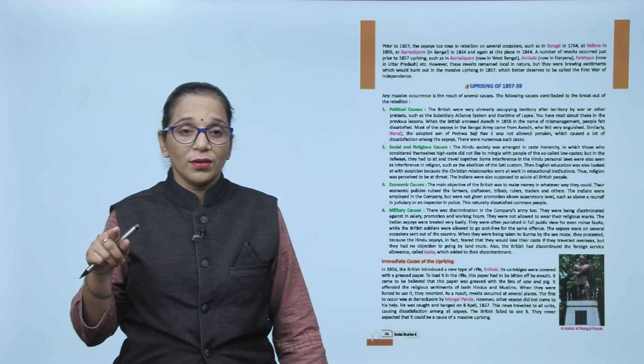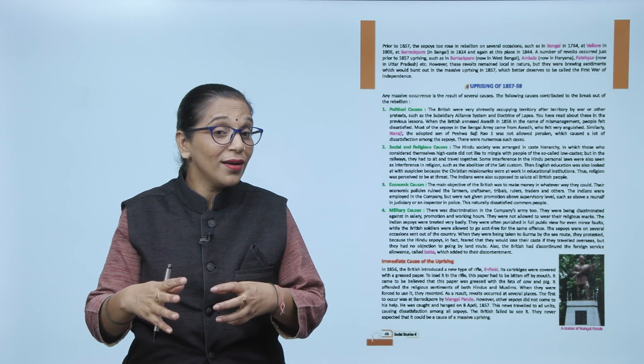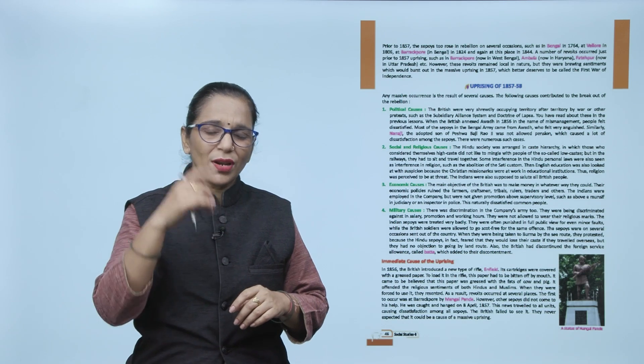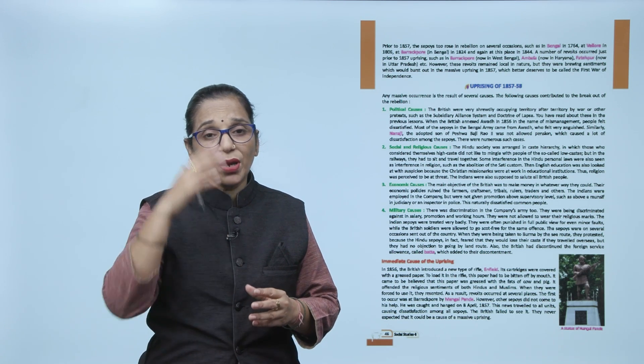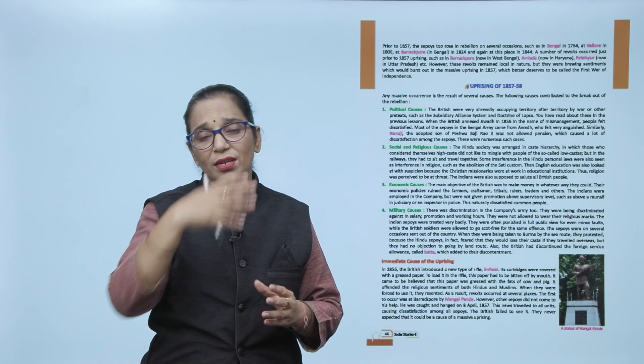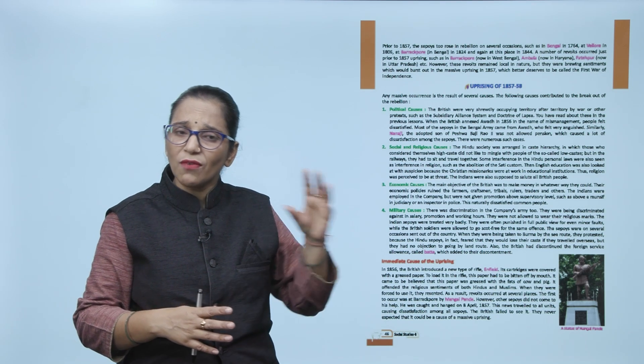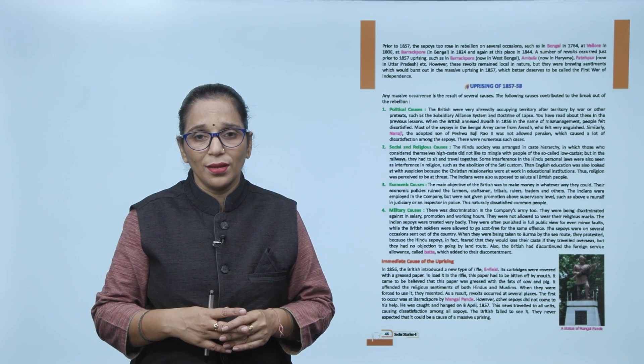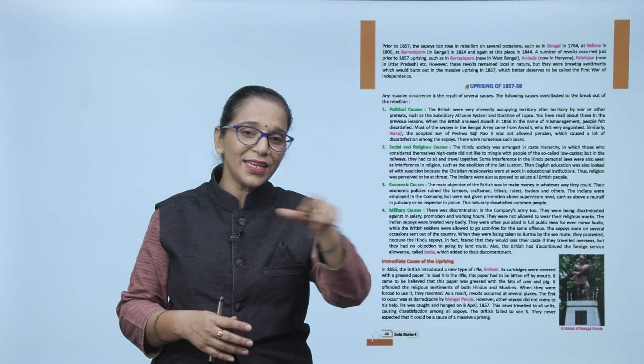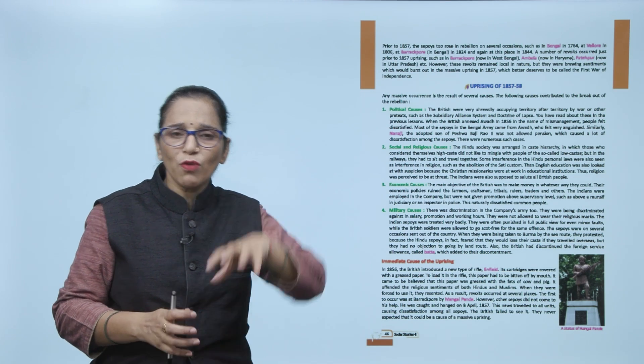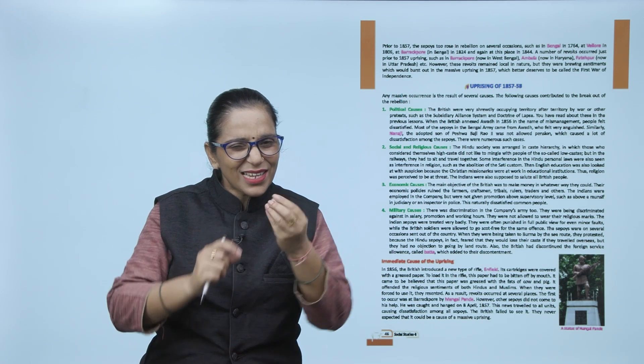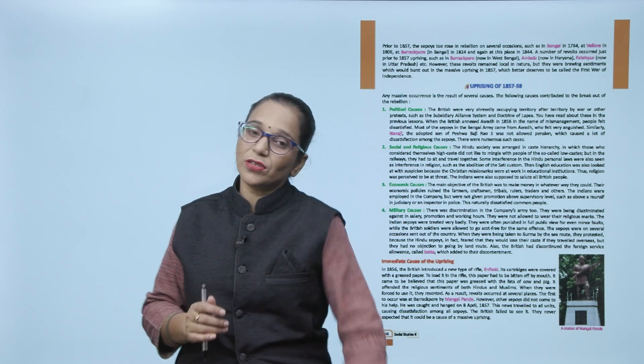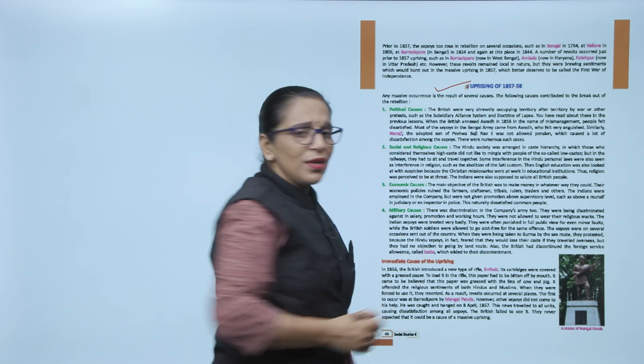Prior to 1857, we are building a background of what happened. The sepoys rose in rebellion at several locations - Bengal in 1764, Vellore in 1806, Barrackpur Bengal in 1824, and again at the same place in 1844. A number of revolts occurred before the 1857 revolt - in Ambala, Barrackpur, Fatehpur. However, these revolts remained local in nature, so they didn't get much significance in history as they were limited to their locality. But all these rebellions gave a spark, gave a fire to the big revolt, and that was the uprising of 1857-58.